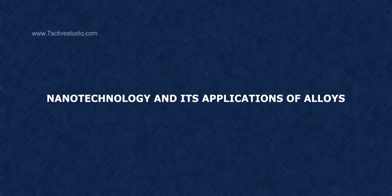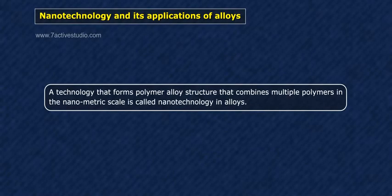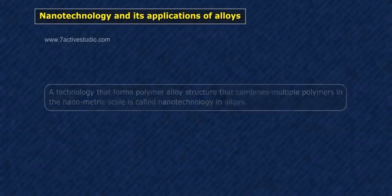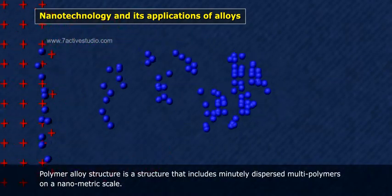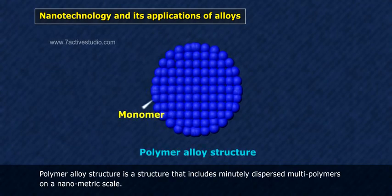Nanotechnology and its applications of alloys. A technology that forms polymer alloy structure that combines multiple polymers in the nanometric scale is called nanotechnology in alloys. Polymer alloy structure is a structure that includes minutely dispersed multi-polymers on a nanometric scale.